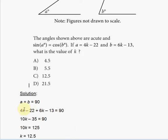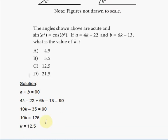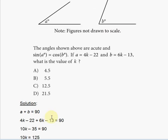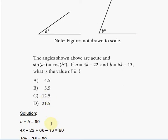Combining like terms, we're going to have 6k plus 4k is 10k, and then minus 22 minus 13 is minus 35. We add 35 on both sides, we're going to have 125 on the right side. Divide both sides by 10 to solve for k, we're going to have k is equal to 12.5. And that's bingo right there, choice C, 12.5.